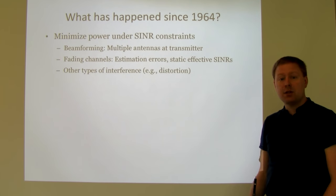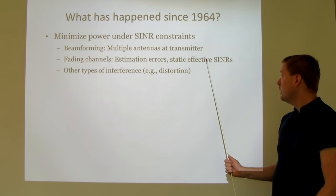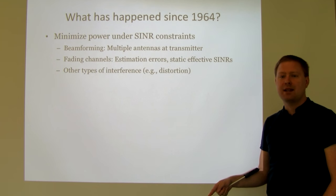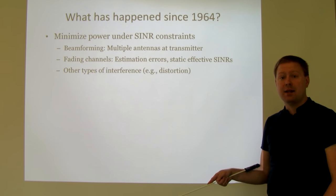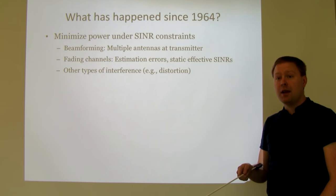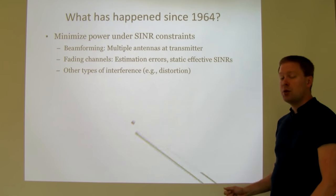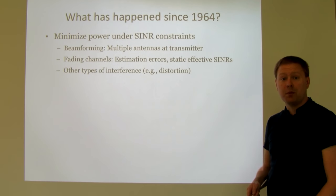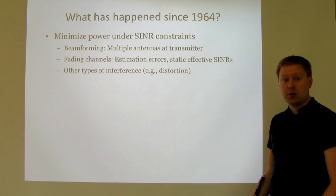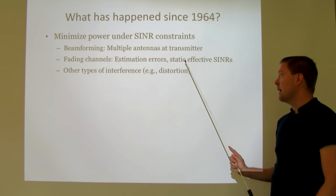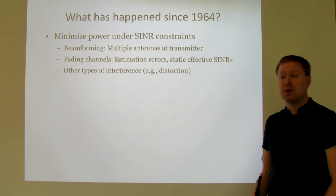Estimation errors in fading systems can be incorporated into these optimization problems. Also, instead of optimizing power in the short run — inverting every channel fluctuation millisecond by millisecond — you can optimize for the long run: if the channel is bad now it will be better later, so you find power that is good in the long run and save energy that way. This is done by computing an effective SINR that describes long-term performance, and it has been done in the literature particularly in the field of massive MIMO. You can also account for distortion from hardware impairments, since the hardware is not perfect.